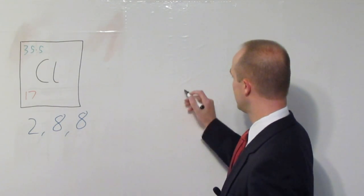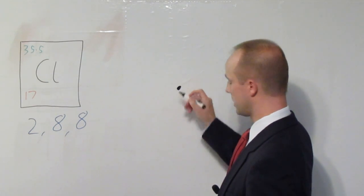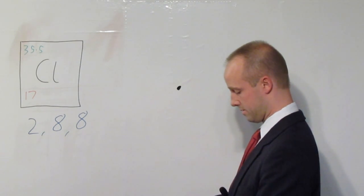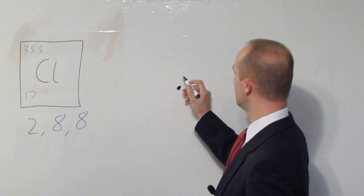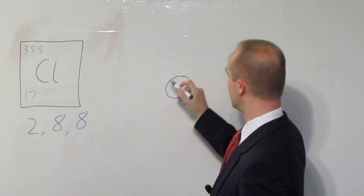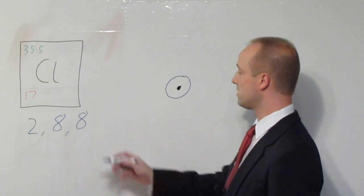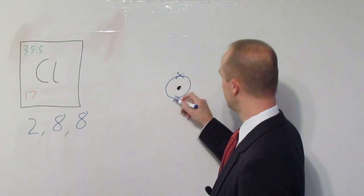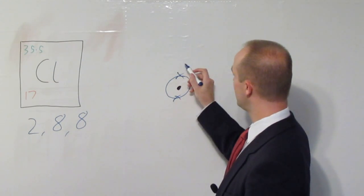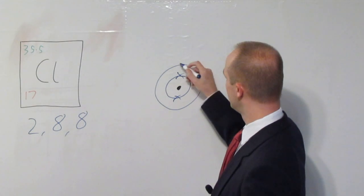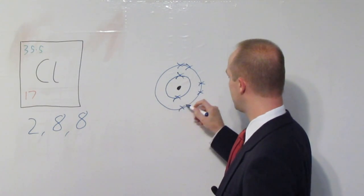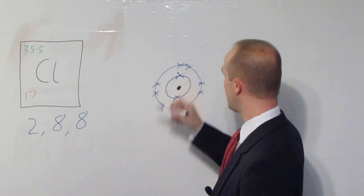So, all you do, draw your nucleus, and then let's start filling those electron shells, those electron orbits. The first shell can fit two, leaving us with 15 out of our original 17. The next one, let's go 3, 4, 5, 6, 7, 8, 9, 10.